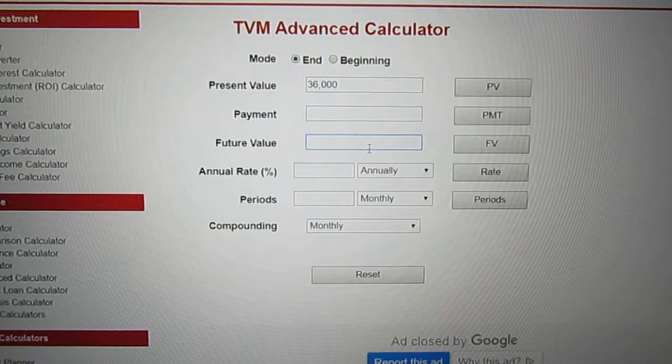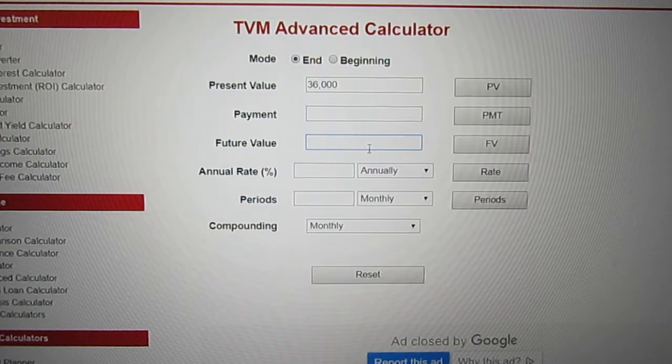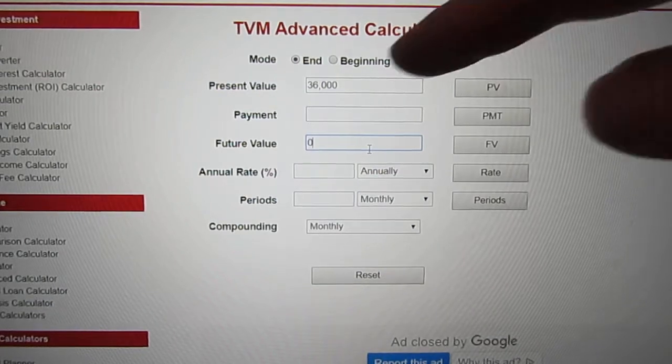And hey, check this out, why is it zero? When you're done paying off your loan, how much money is left? Zero. A future value is zero when there's a loan.